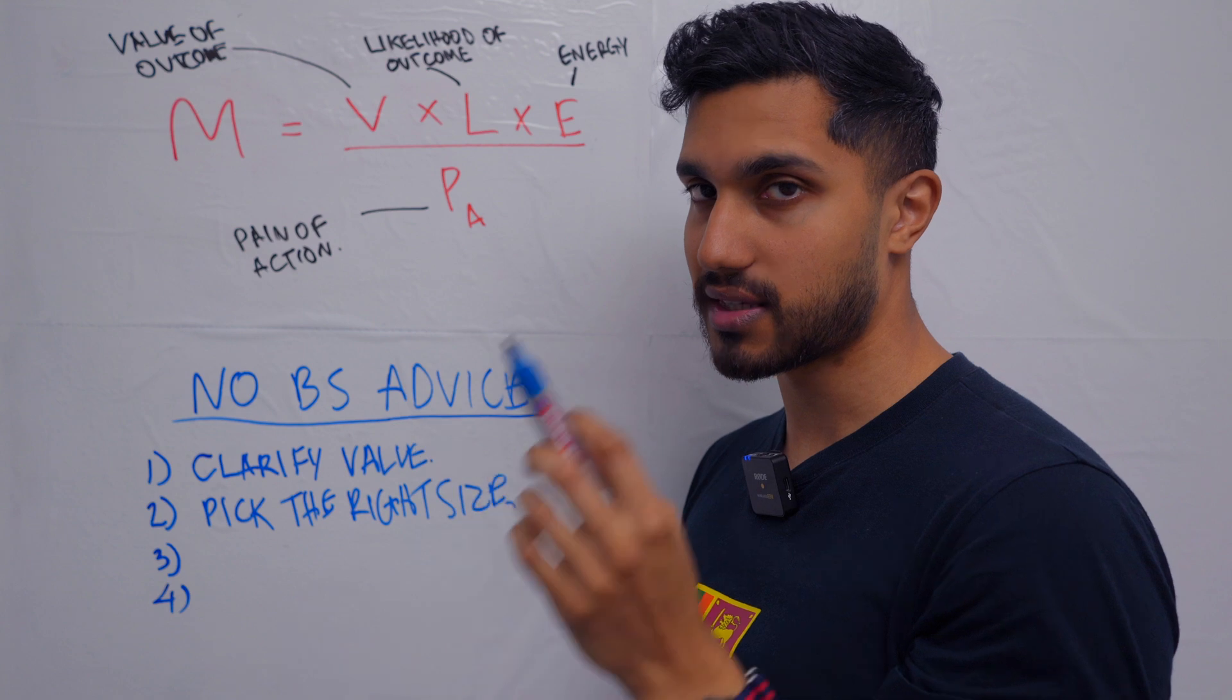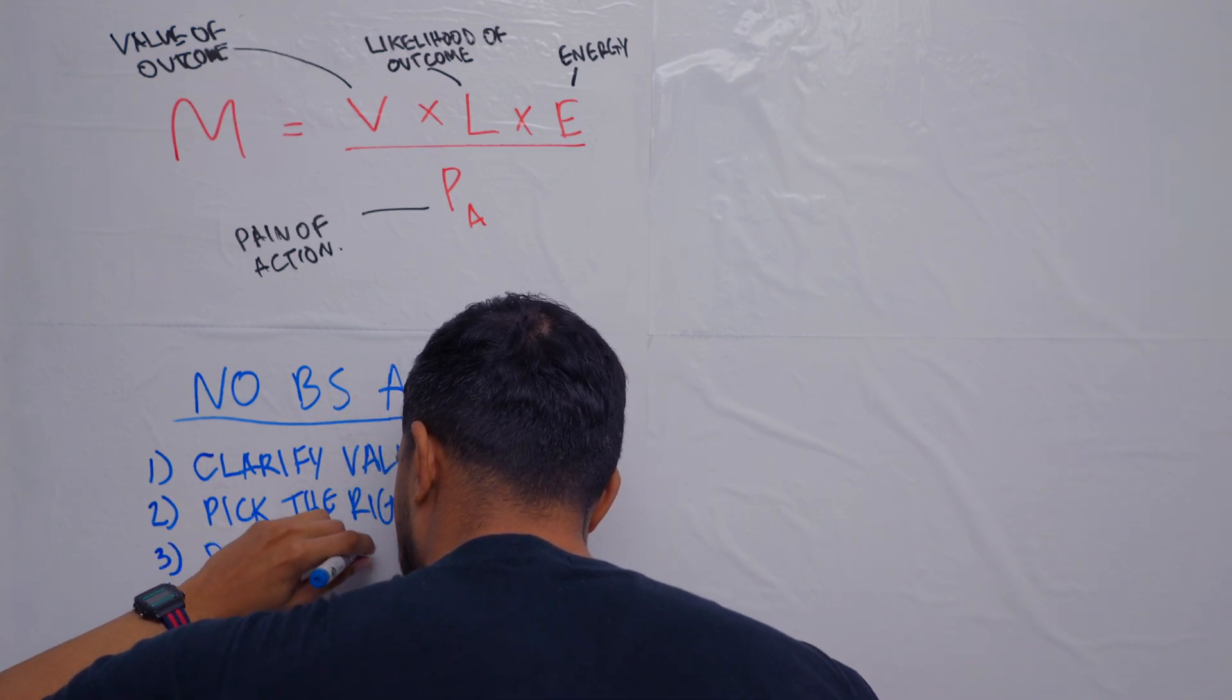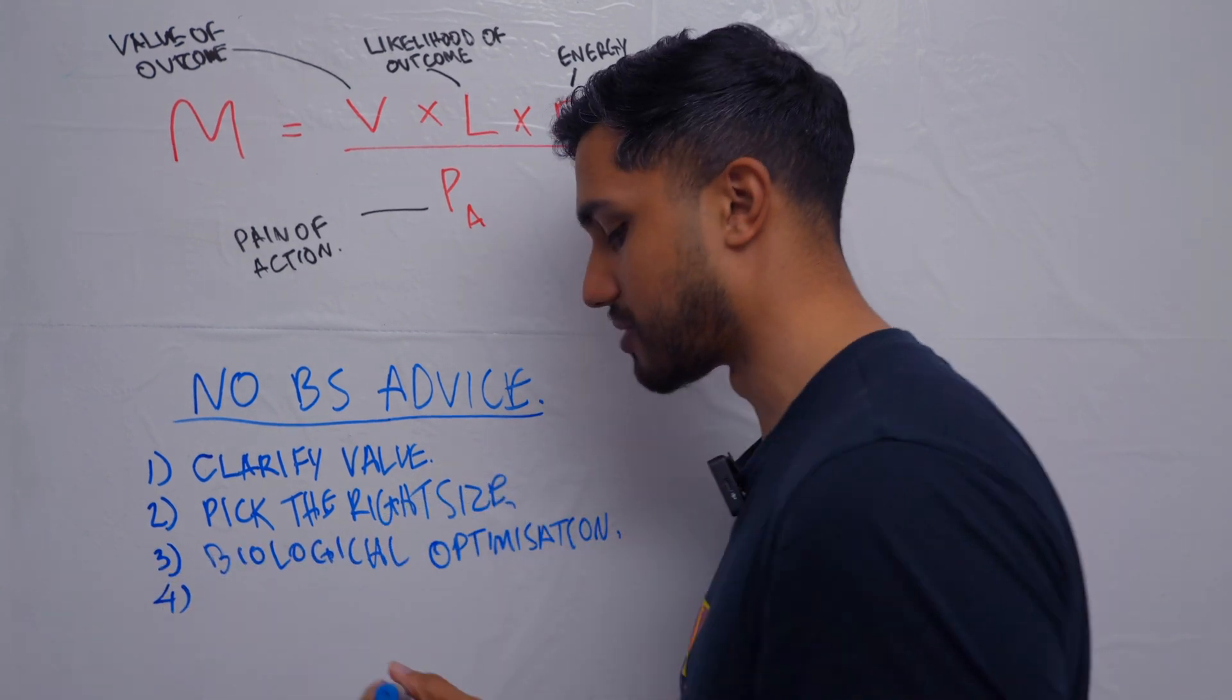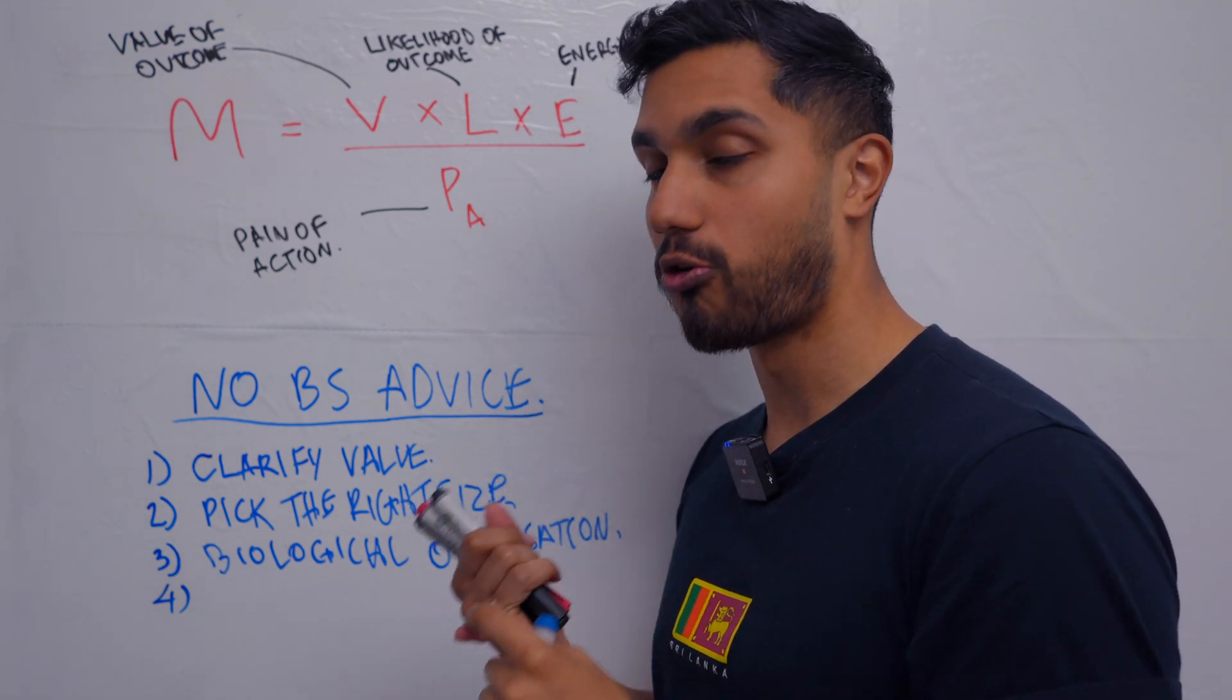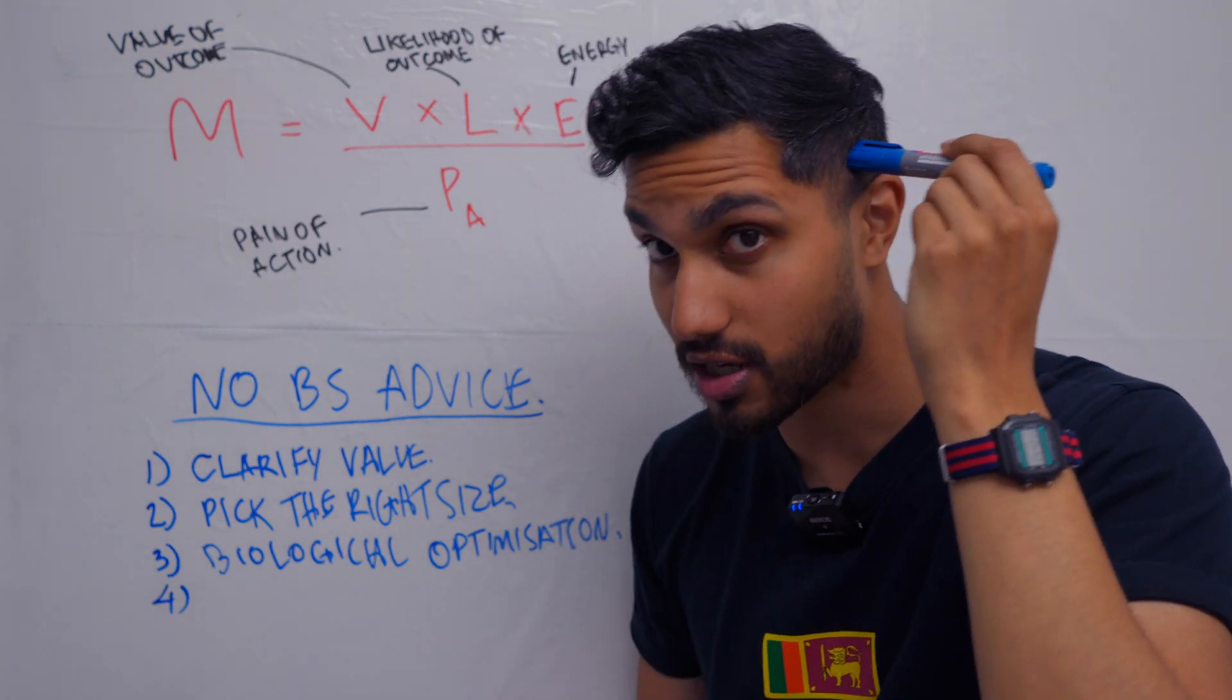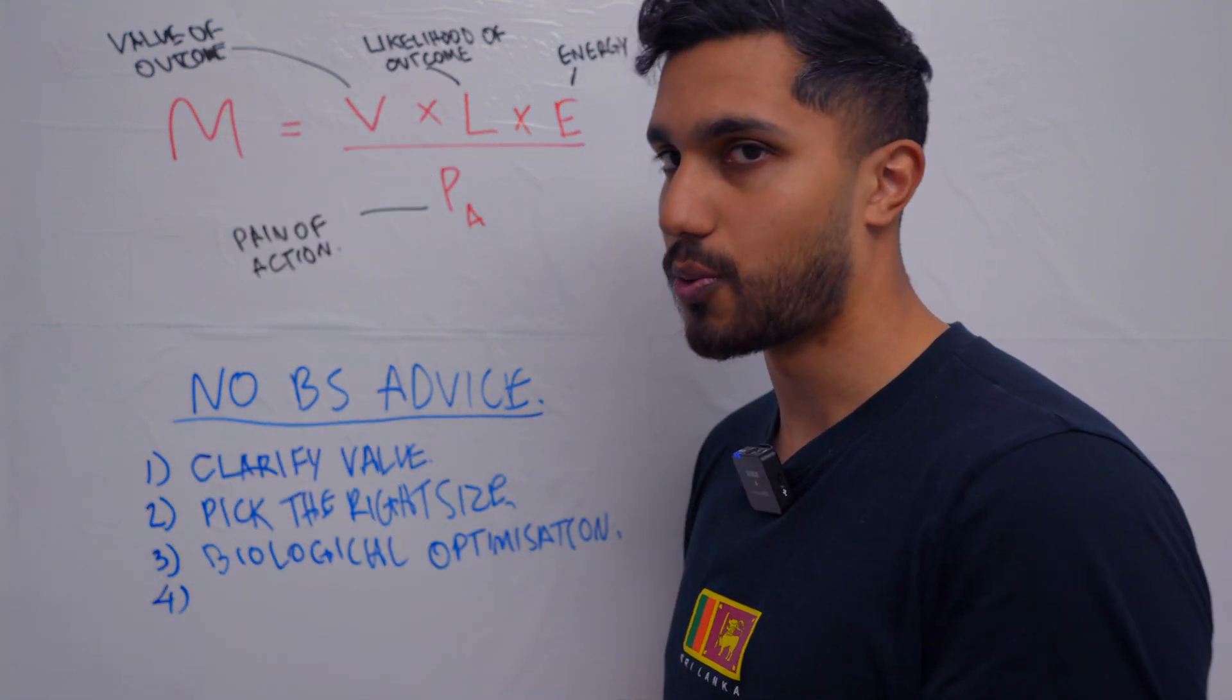And for the last thing, energy—there are two things that you can do to maximize your motivation. First thing is biological optimization. It sounds long, but it's just everything that you've ever heard from Andy Huberman. Biological optimization is what? Sleeping at least seven hours—more is better—because that allows you to operate at the highest possible energy level to do the goal-directed behavior. Goal-directed behavior comes from your cortex. That is the most energy-demanding part of your brain. And so you need to give yourself enough of a battery to do the work.